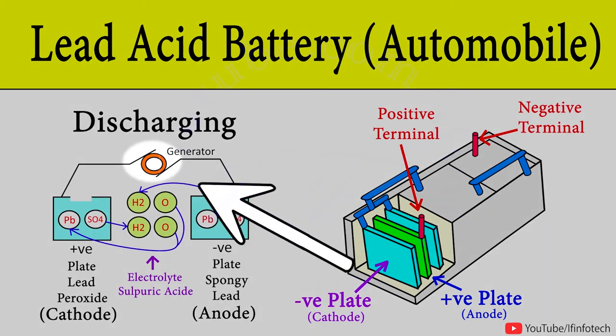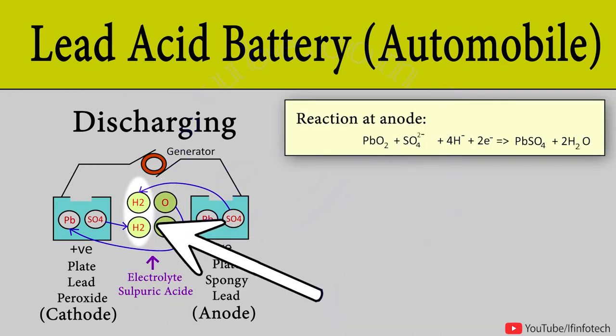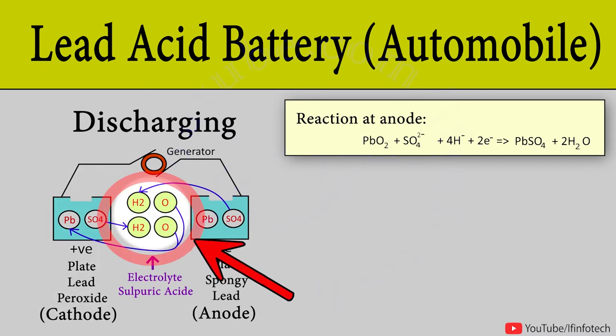For discharging state, loads are connected across the plate. The sulfuric acid again breaks into two ions, positive and negative ions. The hydrogen ions react with lead peroxide and make lead monoxide and water. Lead monoxide starts reacting with sulfuric acid and creates lead sulfide and water.